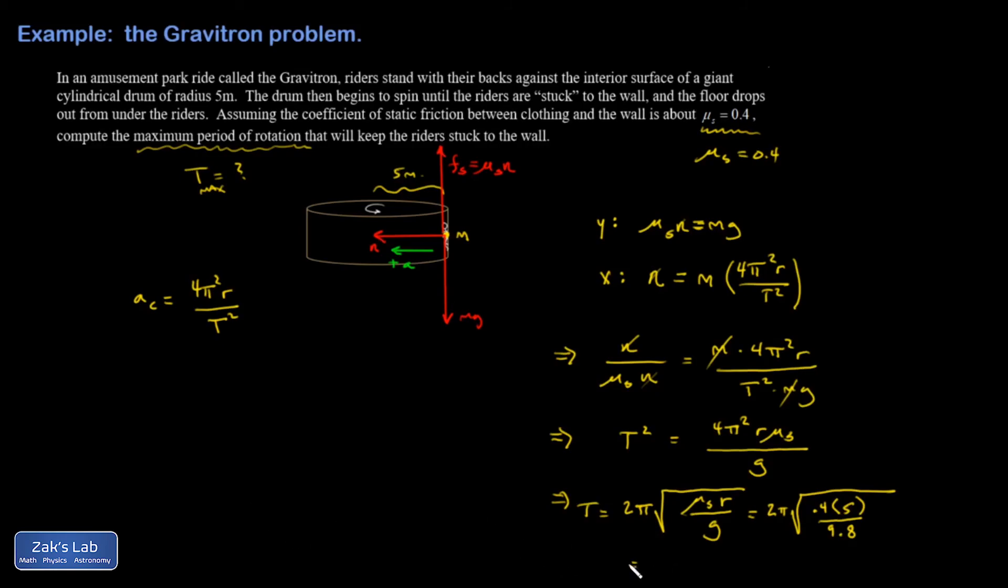And I get a maximum period of 2.84 seconds. Again, it's called a maximum because any period larger than that means the thing is rotating slower. That means the normal force decreases. That means the friction force decreases, and the people start to accelerate down the wall.